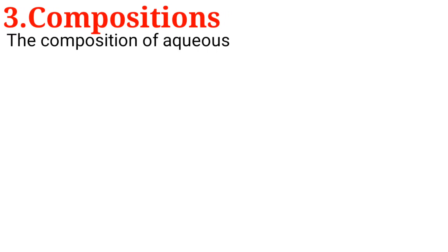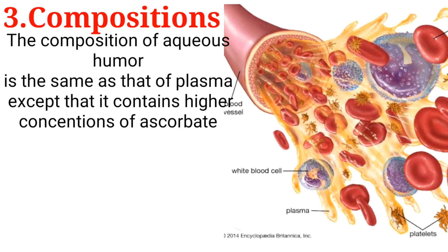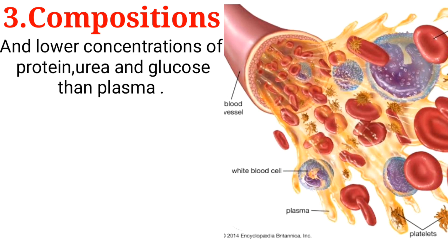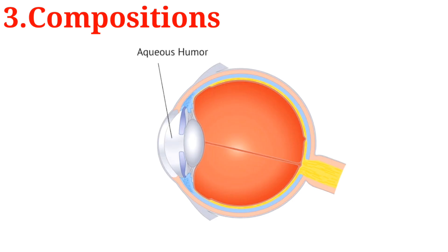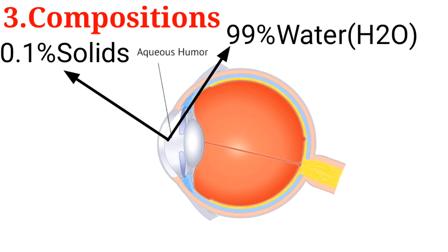The composition of aqueous humor is the same as that of plasma, except that it contains higher concentrations of ascorbate, pyruvates, and lactate, and lower concentrations of protein, urea, and glucose than plasma. Therefore, aqueous humor contains 99% water and only 0.1% solids.